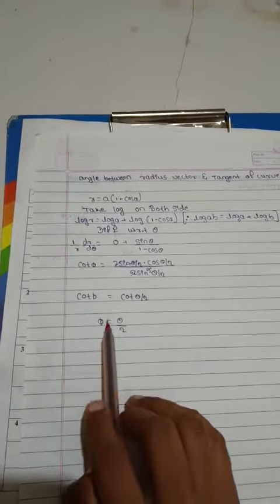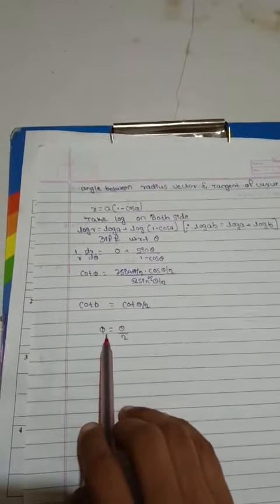Cot and cot get canceled, and phi is equal to theta by 2.